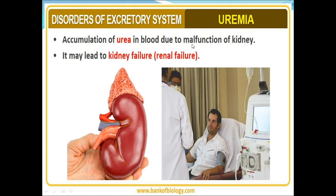For example, uremia — the accumulation of urea in the blood due to malfunction of the kidney — is referred to as uremia. Urea should not accumulate in the blood; it becomes toxic to the human or animal body system. If urea purely accumulates in the blood and is not eliminated by the kidney, it results in malfunction of the kidney and may lead to kidney failure — also referred to as renal failure.